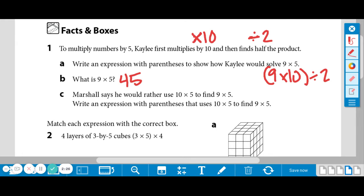So it gives us what to start with, which is 10 times 5. And that's step one. So that's going to go in parentheses. We want to find out 9 times 5.